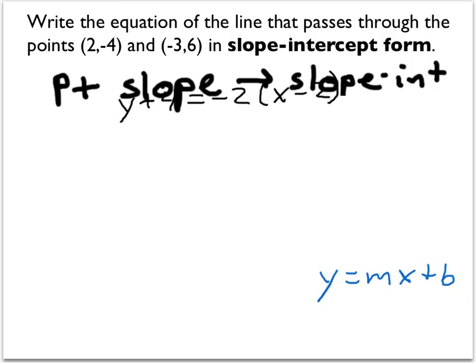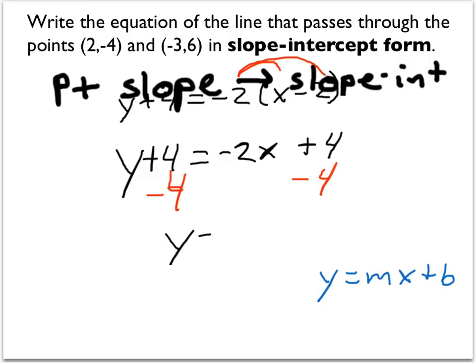So first, let's use the distributive property on the right side. Next, we'll subtract 4 from both sides, which leaves us with y is equal to negative 2x plus 0. And so y equals negative 2x is our slope-intercept form.